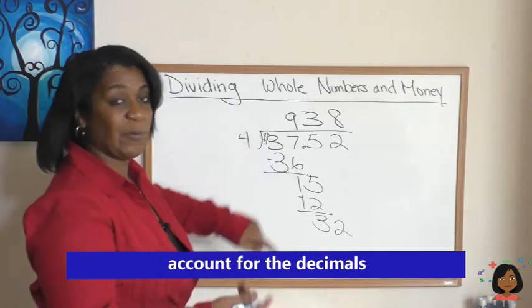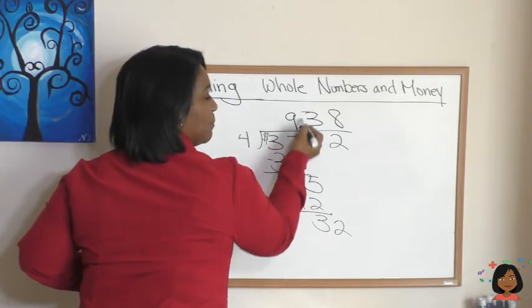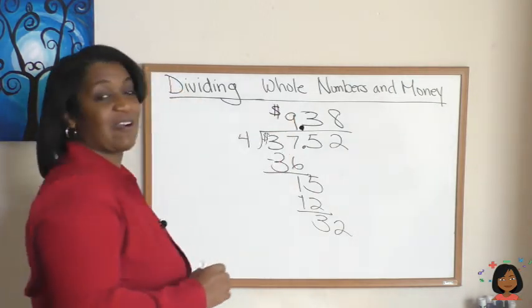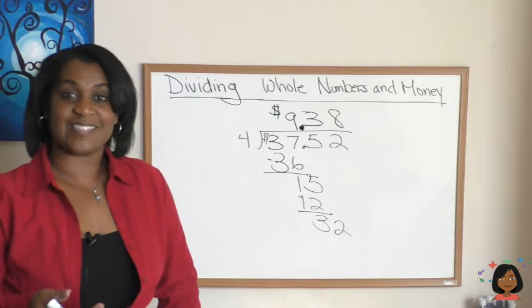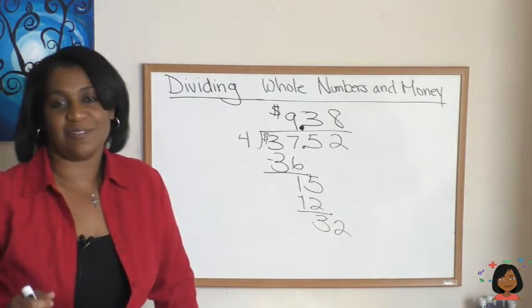Here's where we have to account for our decimals and dollar sign. We have a decimal here. We want to bring it just right up and account for it right above where it was. And now add the dollar sign, which means that our answer is $9.38. So that's the rule. Do your division as normal and account for your dollar sign and decimals.